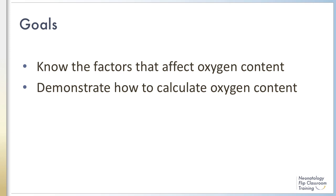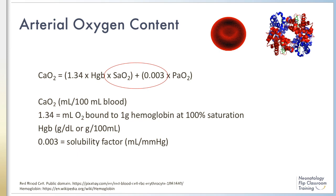Goals for this module are for you to know the factors that affect oxygen content. And by the end of this module, I hope that you are able to demonstrate how to calculate oxygen content. Most of the oxygen in blood is carried by hemoglobin and a small part is dissolved in the blood. Together, their sum is the arterial oxygen content or CaO2.